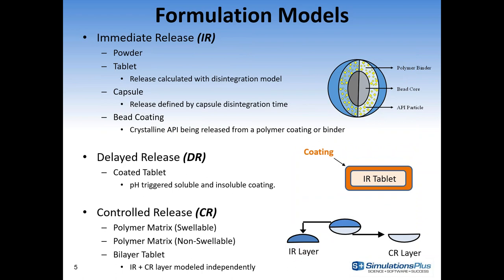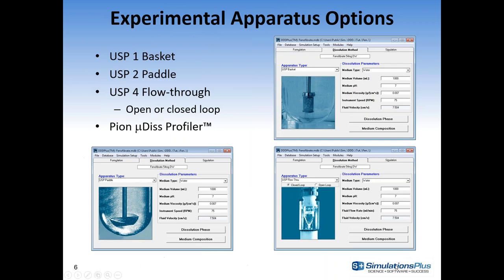The formulation models available in version 5 included powder, tablet, capsule, IR bead coating, a delayed-release coated tablet, CR controlled-release matrix tablets, and a bilayer tablet. The experimental apparatuses include USP1, USP2, USP4 flow-through in open or closed loop, and the Pion microdisc profiler. We've now added a new ASD — artificial stomach duodenum — apparatus model to DDD Plus version 6.